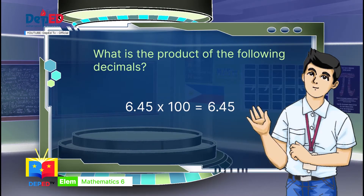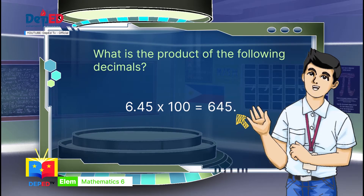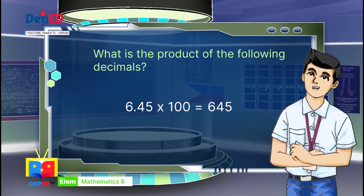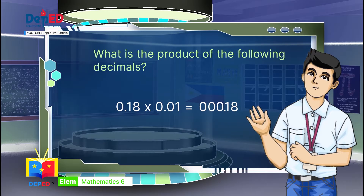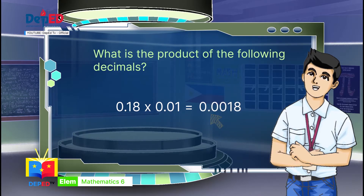Sure, Maestro Olaso. For number 1, I just moved the decimal point two places to the right based on the number of zeros in 100. You need to indicate that you multiply 645 and 1 in your explanation. So, 6 and 45 hundredths times 100 equals 645. For number 2, I just moved the decimal point two places to the left based on the number of places in 100. You need to indicate that you multiply 18 and 1 in your explanation. So, 18 hundredths times 1 hundredth equals 18 ten-thousandths.